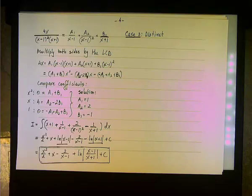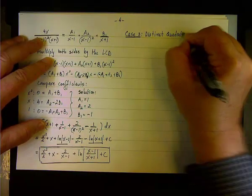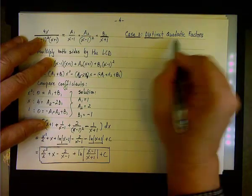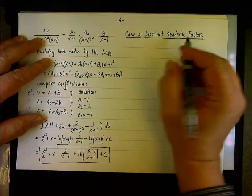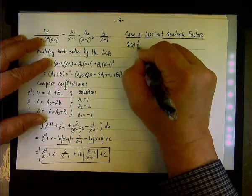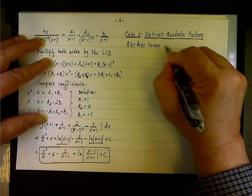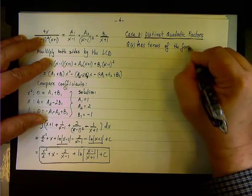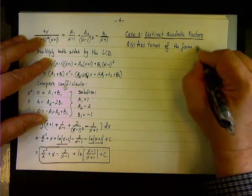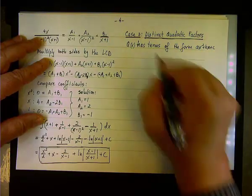Distinct quadratic factors. Remember, Case 4 would be the repeated quadratic factors. So in this case, the denominator q(x) has terms of the form ax² + bx + c — actually, it's factors in this case.